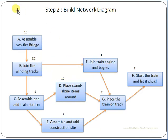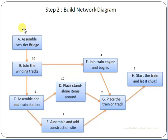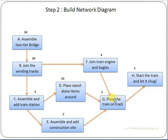The second step is to build the network diagram, then find all possible paths. For example, there are three possible paths: A-B-F-G-H; A-B-C-D-G-H; and A-B-C-E-G-H. You can see from the diagram how you can travel each path — for instance, A-B-C-D-G-H is one possible path, and A-B-F-G-H is another.